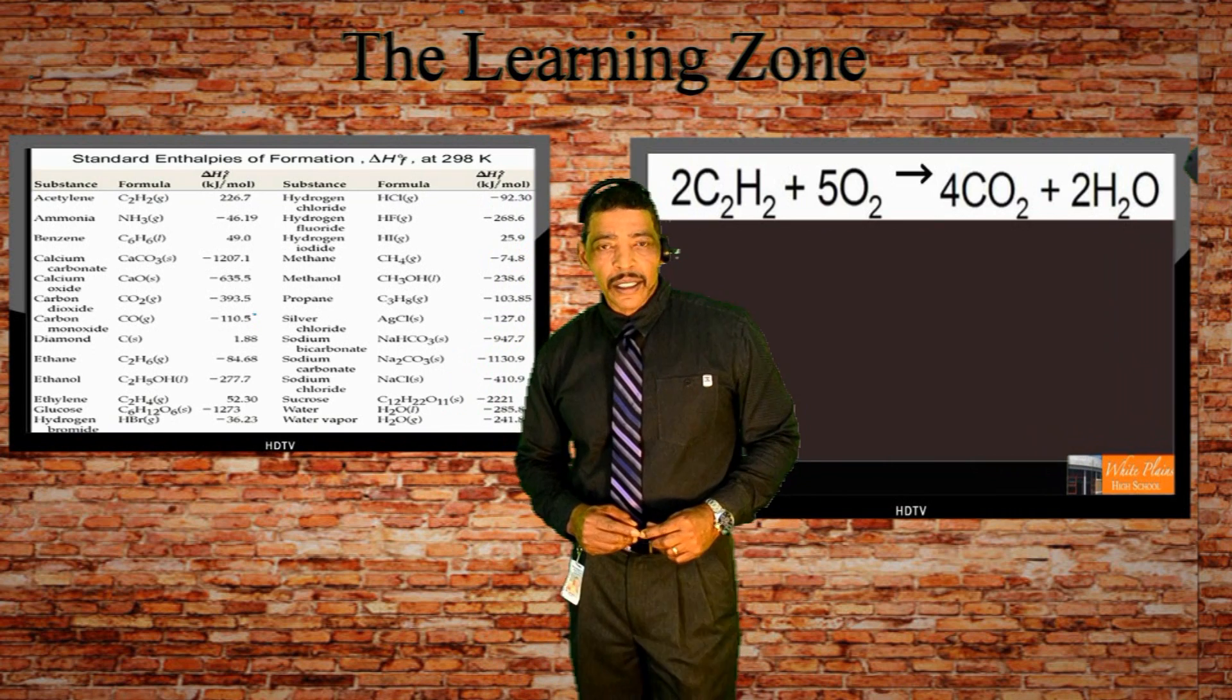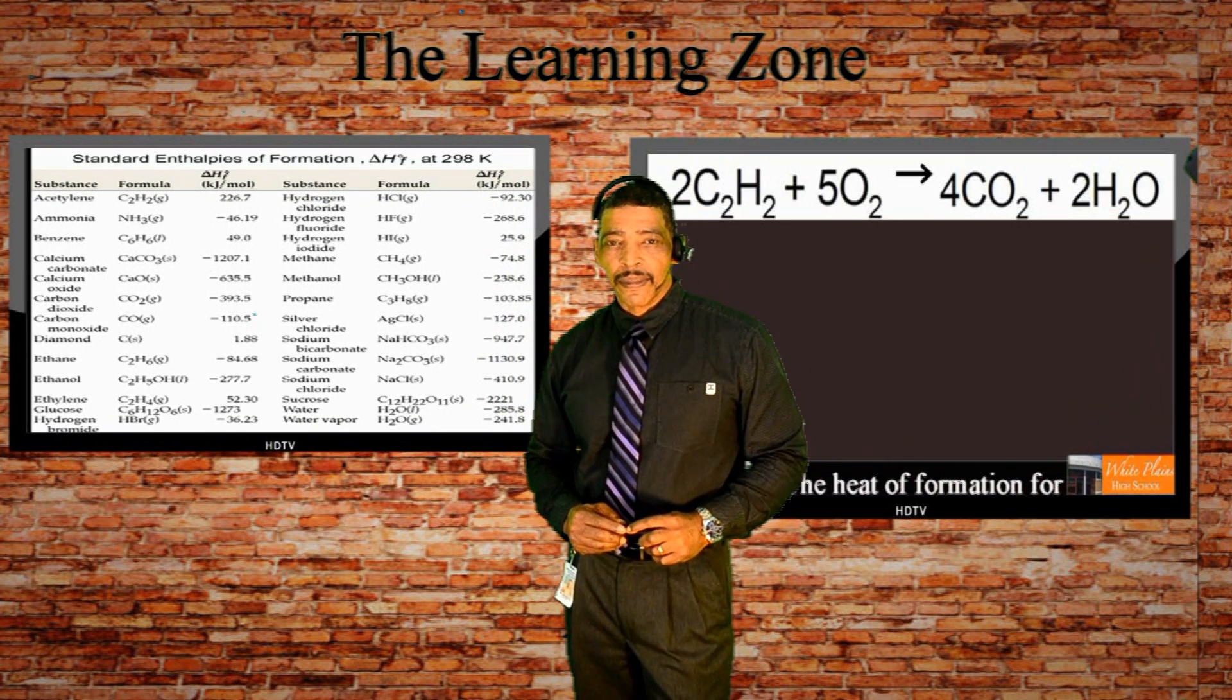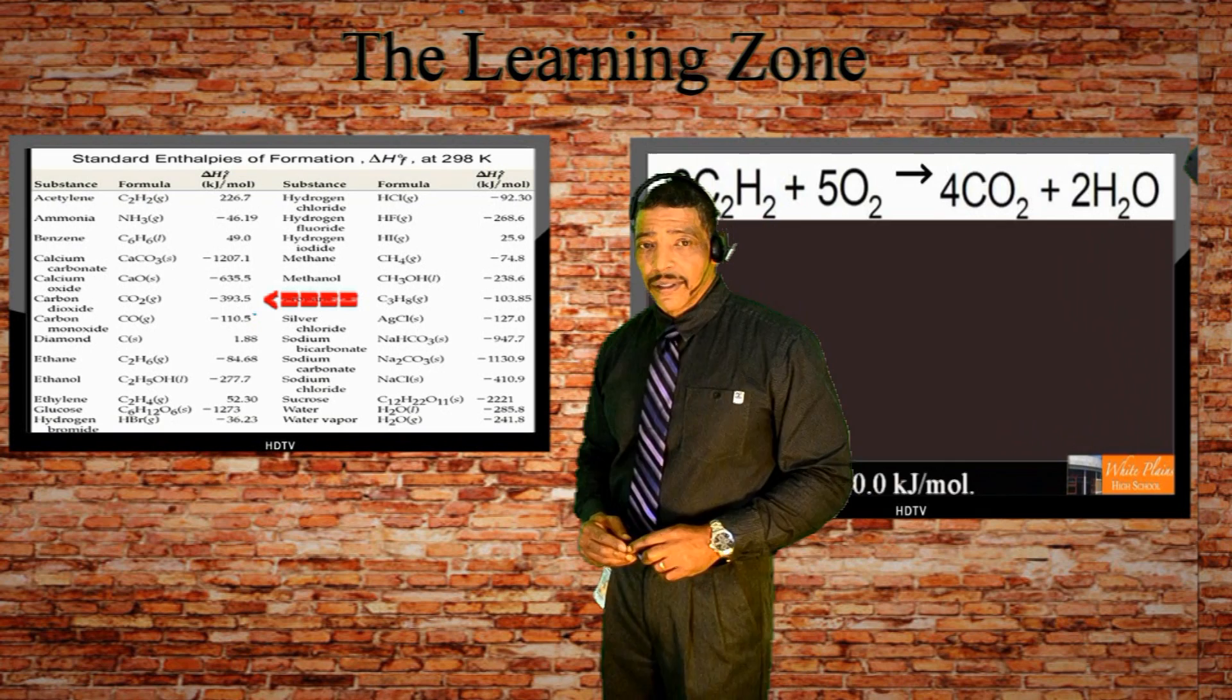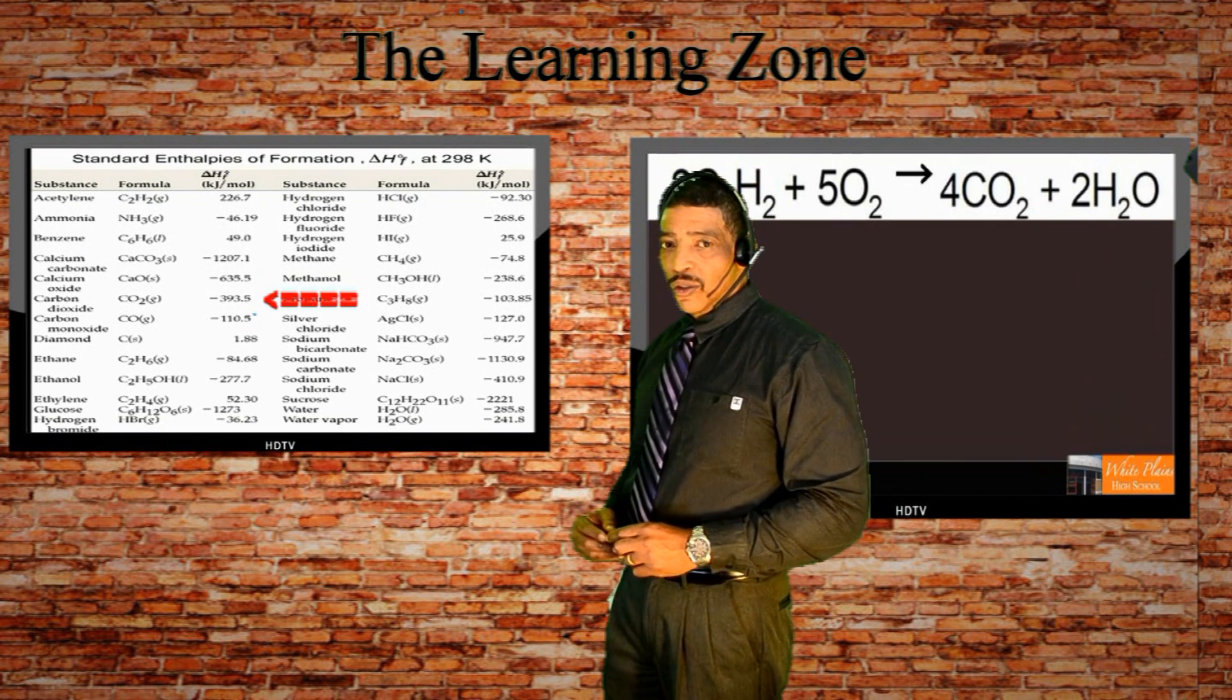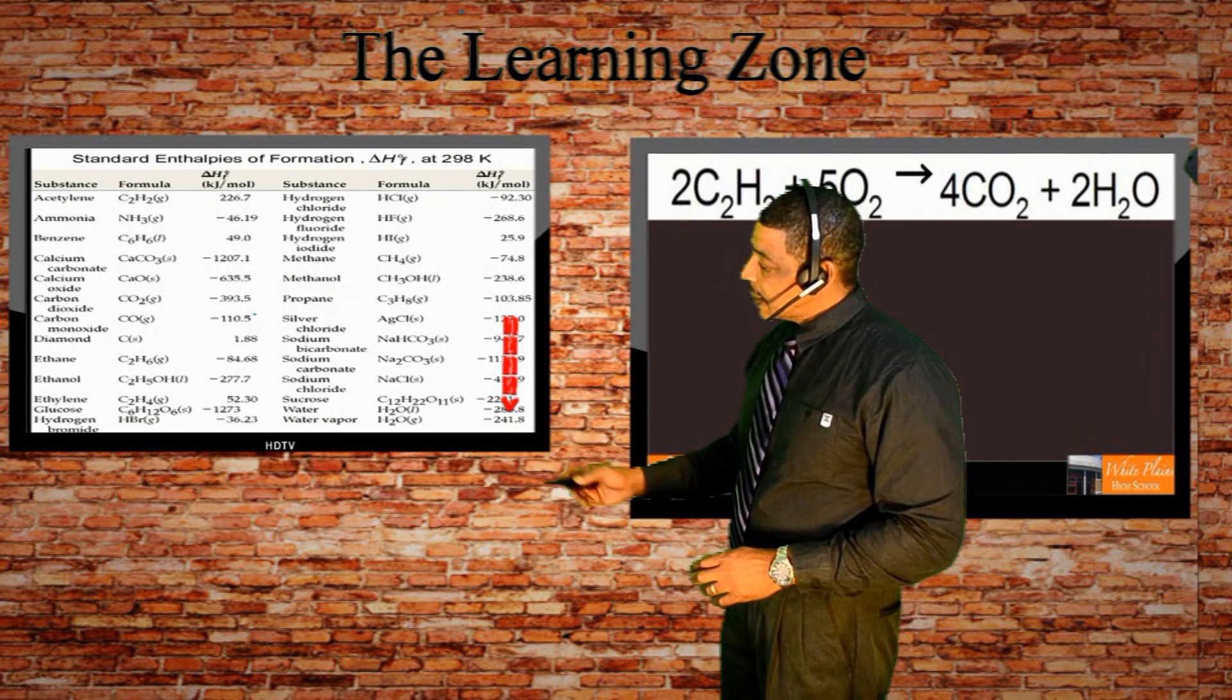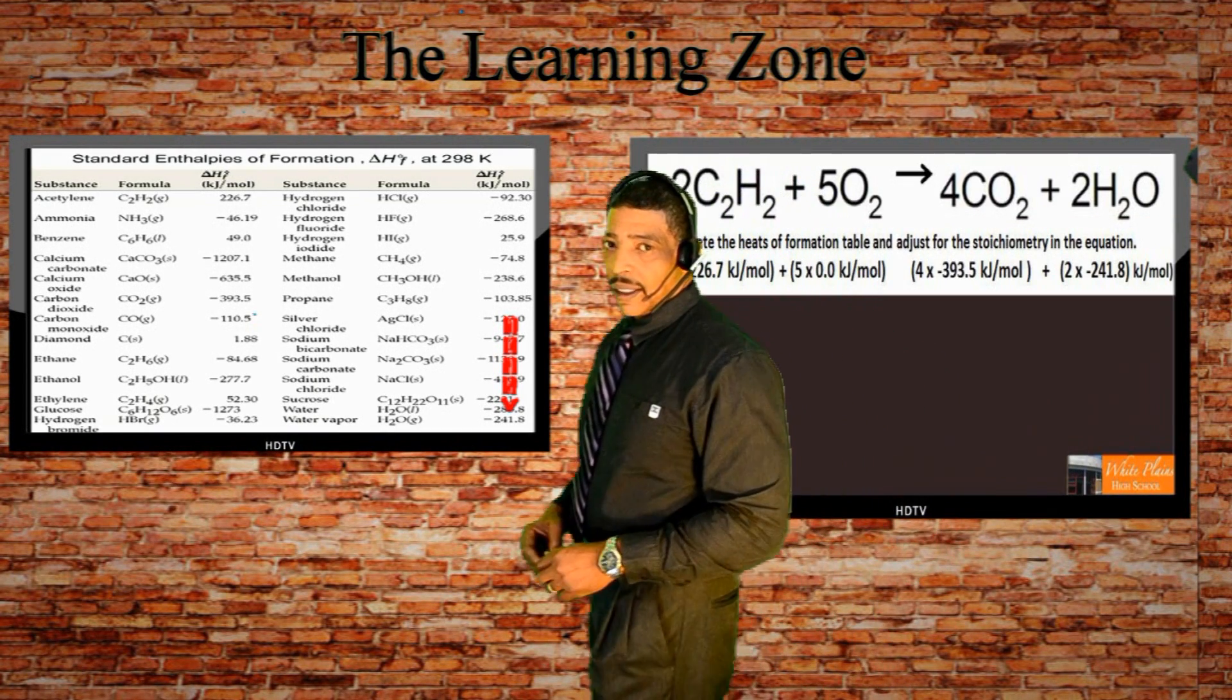The heat of formation of any element will always be 0.0. The heat of formation of carbon dioxide gas is an exothermic process, negative 393.5 kJ per mole. And the heat of formation of water vapor is listed at a negative 241.8 kJ per mole.